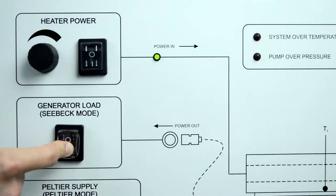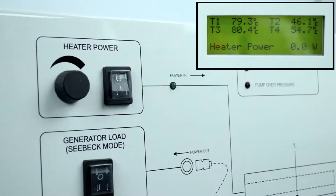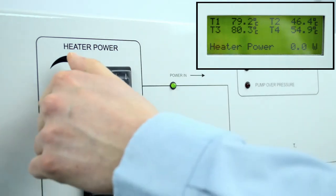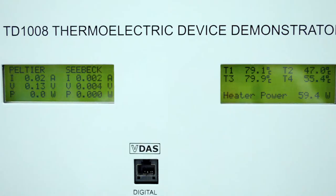For Seebeck tests, the equipment uses an external cold water source and variable power electric heater to create a temperature difference across the device. This in turn produces an electromotive force.